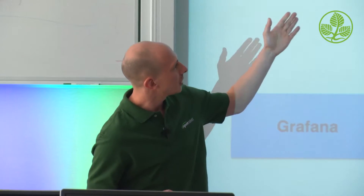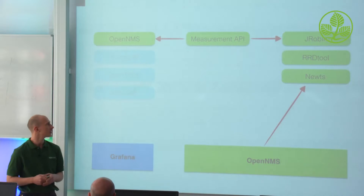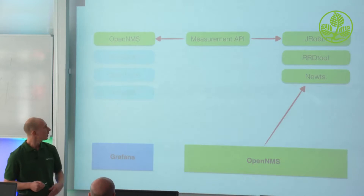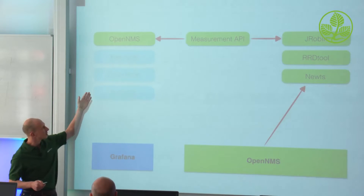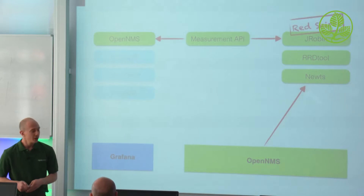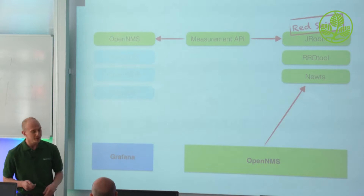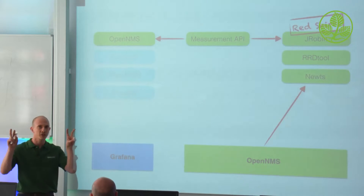The measurement API completely abstracts, from the OpenMS point of view, the technology used as a time series data store. So if you have OpenMS 16 running, you can directly use Grafana — it doesn't matter if you use JRobin, RRDtool, or Newts. On Grafana we have built a plugin which provides exactly the access to the REST API through OpenMS.